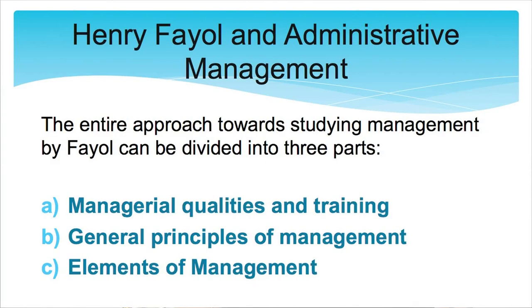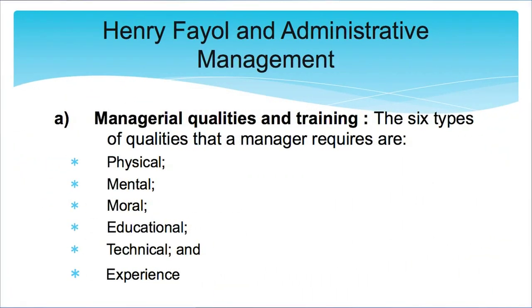Next is Henry Fayol's administrative management theory, again under the classical approach. Fayol's entire approach can be divided into three parts. First is managerial qualities and training — the qualities and training required for a manager. Under this there are six components: physical fitness, mental abilities, moral ethics, educational qualification, technical knowledge about the particular task, and whether the manager has the experience to perform that task.